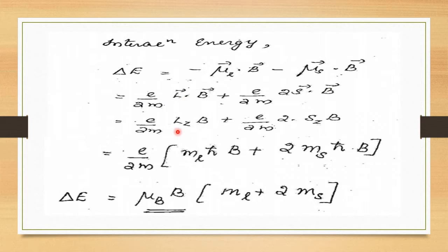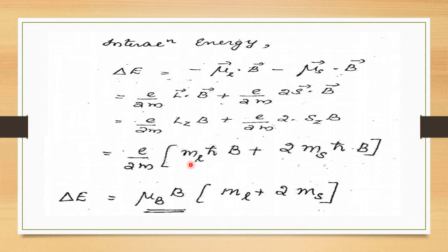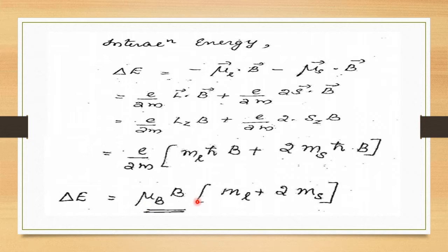Since L·B = Lz·B and S·B = Sz·B, we substitute Lz = ml·ℏ and Sz = ms·ℏ. This gives the equation (e/2m)(ml·ℏ·B + 2ms·ℏ·B), where e·ℏ/2m is the Bohr magneton μB.